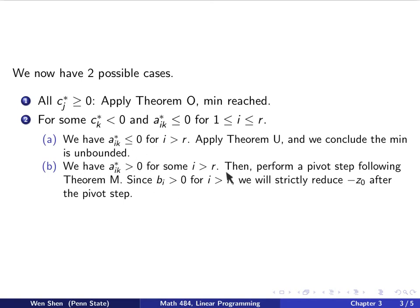So, if that is the case, then we can perform a pivoting step following our theorem M, the one for the actual simplex method. And then since now the bi is on the right-hand side for i bigger than r is strictly positive, and by the theorem M, we know that we actually will strictly reduce this minus z0 value after the pivot step. What does it mean is that you will actually reduce the value of the objective function at the basic feasible solution.